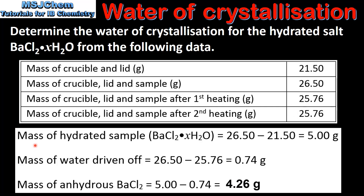First we'll determine the mass of the hydrated sample. To do this we subtract the mass of the crucible and lid from the mass of the crucible, lid and sample, which gives us 5.00 grams. Next we determine the mass of water driven off when the sample was heated. To do this we subtract the mass of crucible, lid and sample after heating from the mass of the crucible, lid and sample, which gives us 0.74 grams.